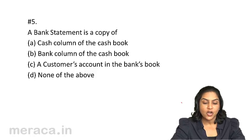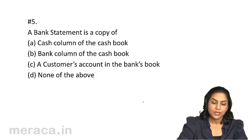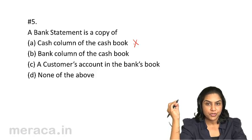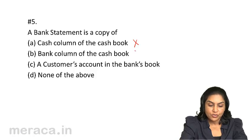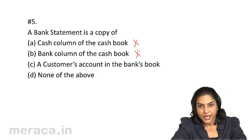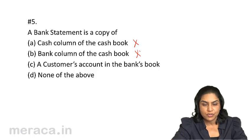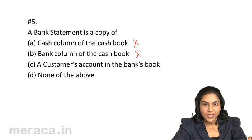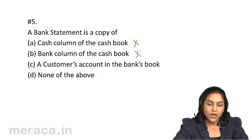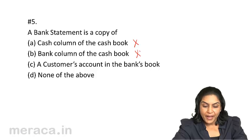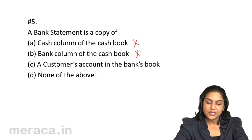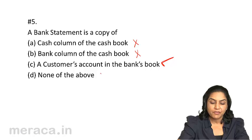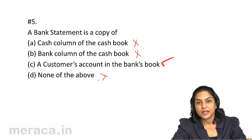Question 5: A bank statement — is it a copy of the cash column of the cash book? No, it has nothing to do with cash. Is it a copy of the bank column of the cash book? No — it is supposed to reflect the same figures, but if your accountant makes a mistake in the bank column, the bank statement will not reflect that mistake. A bank statement is a copy of a customer's account in the bank's books — this is the right option. Therefore, 5C is the correct answer.